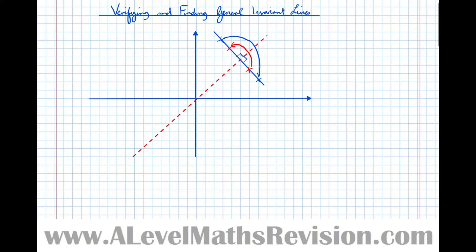However, the line itself remains intact — any point on that line will be reflected to remain on that line. So this line here, when reflected, even though the points move, the line itself remains intact. That's what a general invariant line is. We can see that under this definition any line with gradient minus one will be an invariant line under a reflection through y equals x.